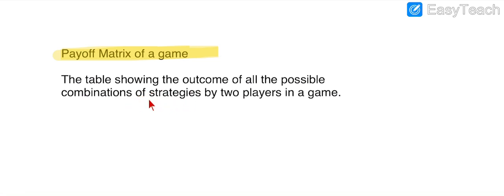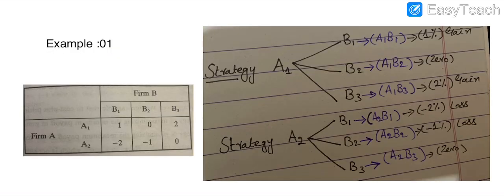You can see all types of games the player can play in a given situation. We can explain the payoff matrix with the help of an example. Firm A and Firm B both have two types of strategies. Firm A can play strategies A1 and A2, while Firm B can play strategies B1, B2, and B3.